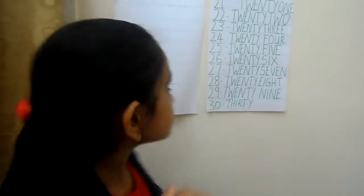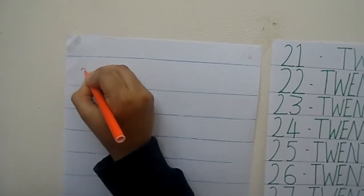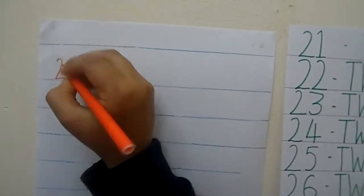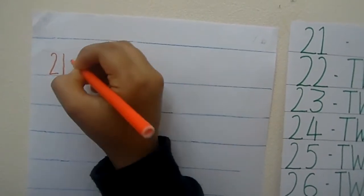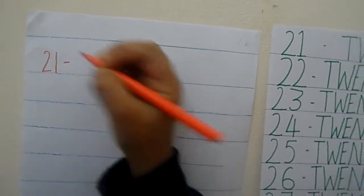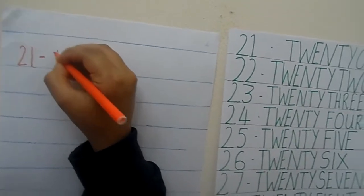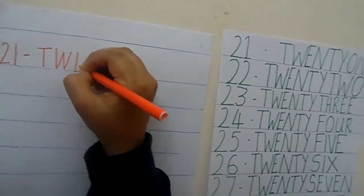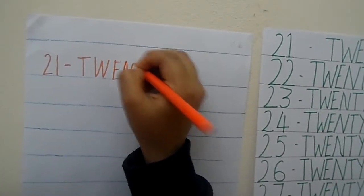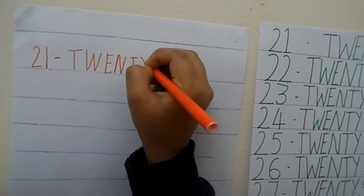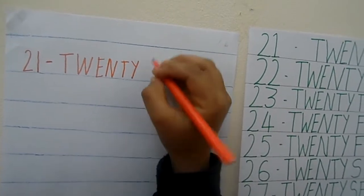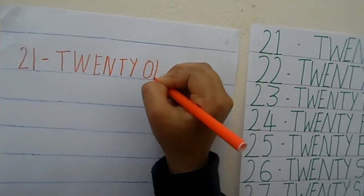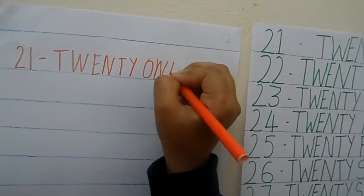So what is the first number? 21. So let's see how to write it. First 2 and a 1. Now let's see the number name of 21: T, W, E, N, T, Y, O, N, E.